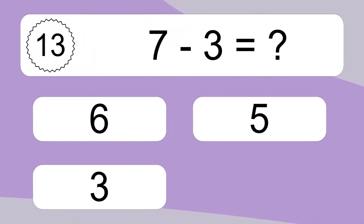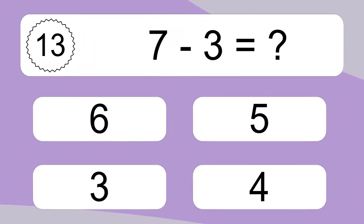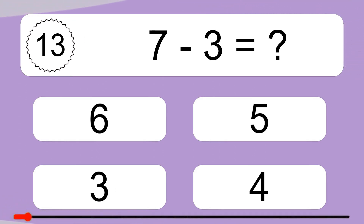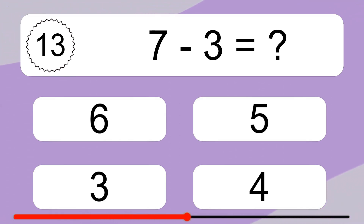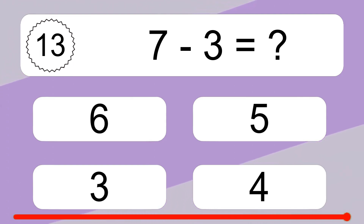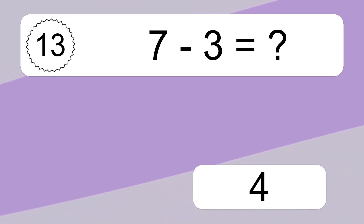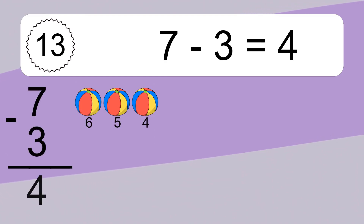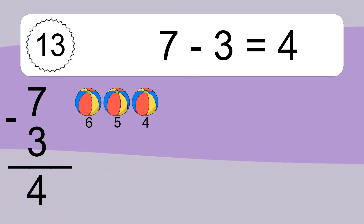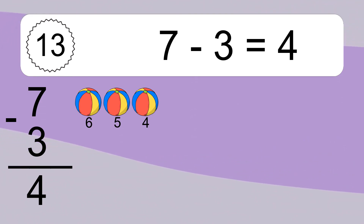7 minus 3 equals what? 7 minus 3 equals 4. Let's count it. 6, 5, 4.